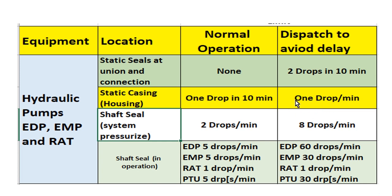Shaft seal: during system pressurizing, one drop per minute. During dispatch: eight drops per minute. Shaft seal in operation, not pressurized: for the engine driven pump, five drops per minute; dispatch, 60 drops per minute. Electric motor pump: five drops per minute in operation; 30 drops per minute during dispatch.